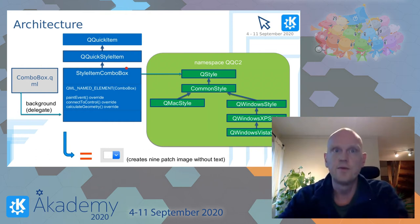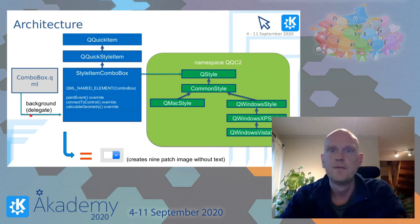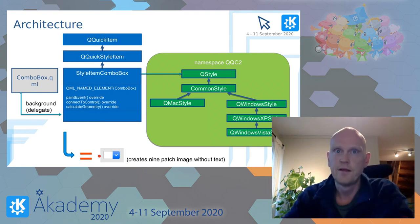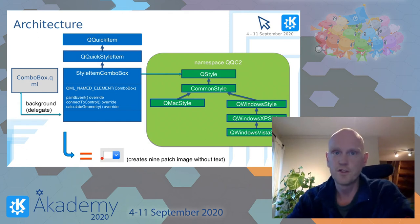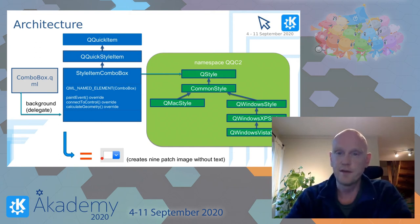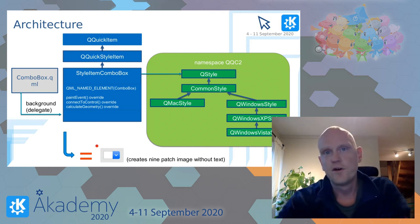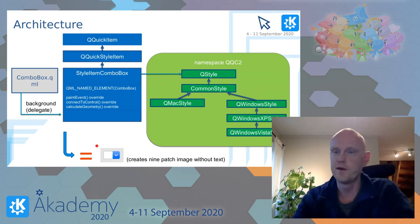The style item will also get a call to calculate geometry at startup. Here we can set up all the necessary connections to the QML combo box. This will be used to detect whenever something changes, like if there's a mouse press in the combo box, and that will force a repaint of the texture. Note that we don't draw the contents here, we only draw the background. This is a pattern that we use for all controls for several reasons. By not drawing the contents, we can reuse the same texture for all combo boxes. We just draw one small version of the background onto what is called a nine-patch image, which can be scaled to any size, and then reuse it for all controls at the same time in the application. And secondly, we want to avoid drawing text using QStyle and QPainter, since we want all text in the QML application to be rendered the same way. Mixing those two can produce an inconsistent look.